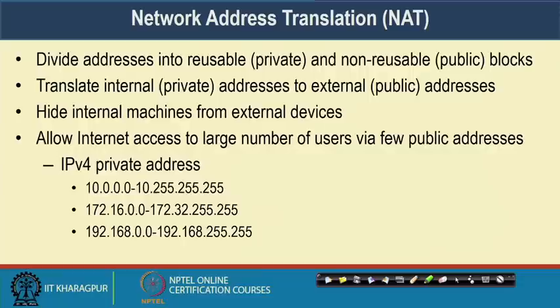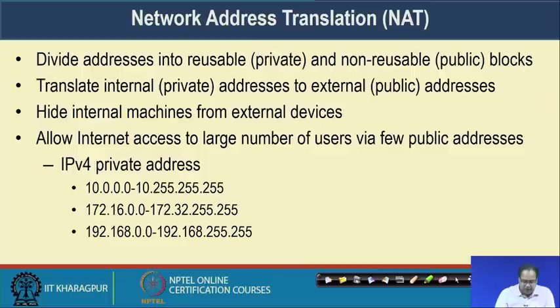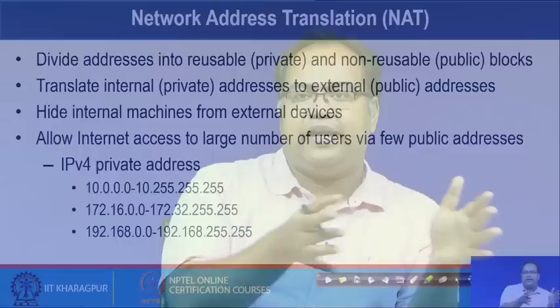The IPv4 address block gives private address ranges from individual classes. From class A we have 10.0.0.0 to 10.255.255.255. From class B it is 172.16.0.0 to 172.32.255.255. From class C it is 192.168.0.0 to 192.168.255.255. From individual classes of IP addresses, one or a few blocks have been designated as the private IP address range.